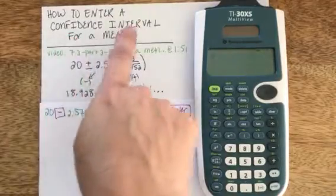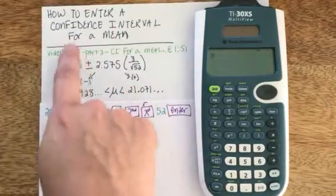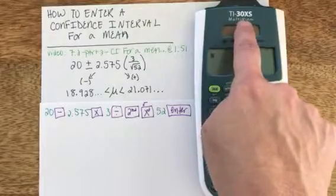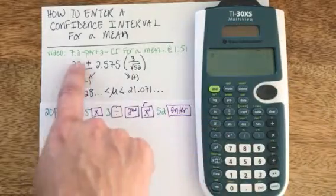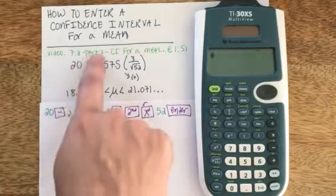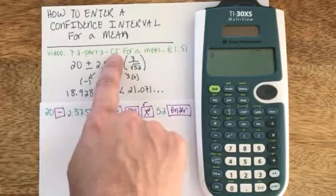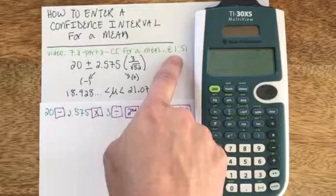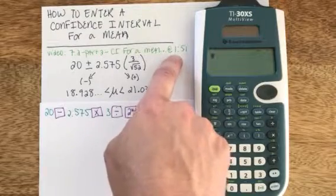Now I'm going to show you how to enter a confidence interval for a mean on the TI-30XS. I took this particular problem from my video titled 7.2 Part 2 CI for confidence interval for a mean at time stamp 1 minute and 51 seconds.